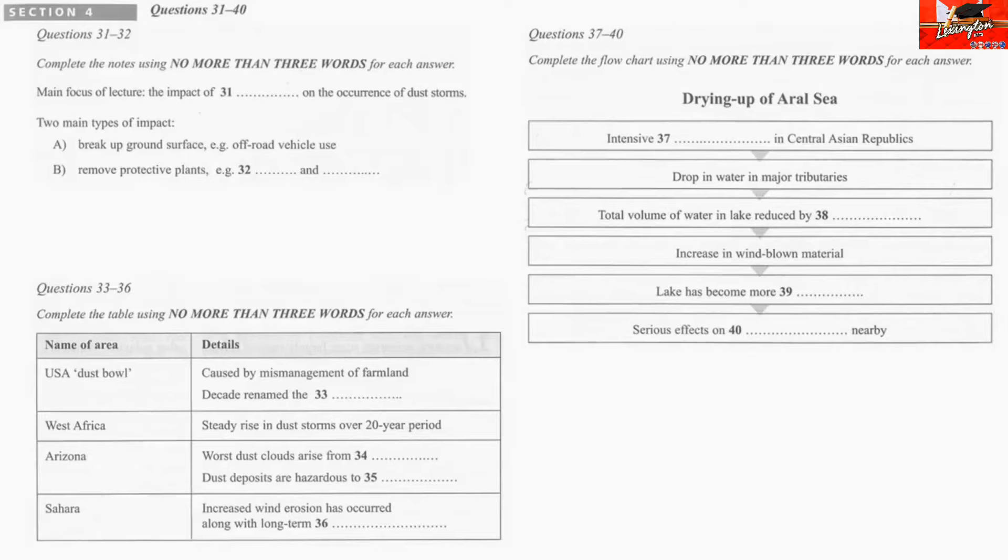So, what are these human activities? Well, there are two main types that affect the wind erosion process, and thus the frequency of dust storms. There are activities that break up naturally wind-resistant surfaces, such as off-road vehicle use and construction, and there are those that remove protective vegetation cover from soils, for example, mainly farming and drainage. In many cases, the two effects occur simultaneously, which adds to the problem. Let's look at some real examples and see what I'm talking about.